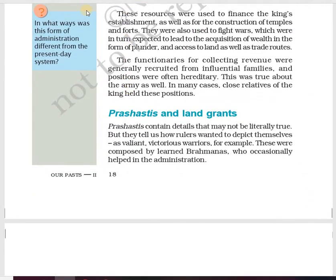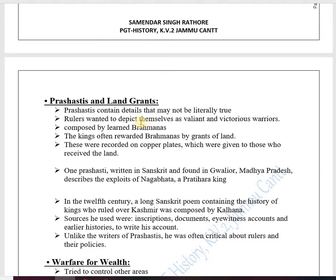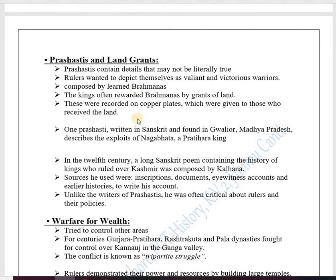In last year's book we read about the Prayag Prashasti — the Allahabad inscription — about Samudra Gupta. Now let's understand what was happening in Prashastis from the 7th to 12th century. Historians think that Prashastis may not be literally true because the king himself directed his officers to write them and glorify him.